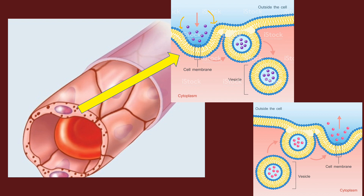This process can be used in both directions, so we can move substances both to and from the blood. We can move something from the interstitial fluid into the blood across the endothelial cell, or move from inside the blood out into the ISF via exocytosis.